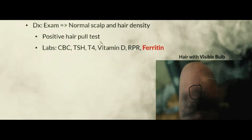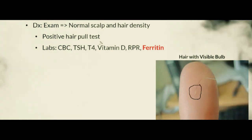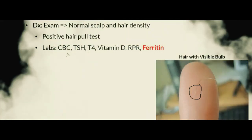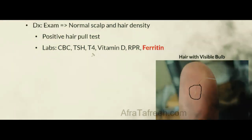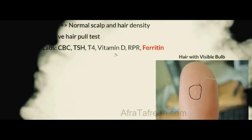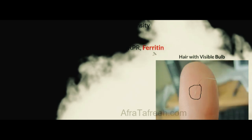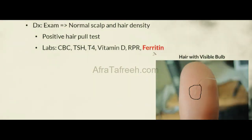There are several labs we may order in a patient with telogen effluvium when there is an unclear stressor or etiology. These include a CBC to evaluate for anemia, TSH and T4 for thyroid disease, vitamin D for deficiency, RPR as an initial test for syphilis, and ferritin to assess for iron deficiency. Menstrual bleeding can be an important cause of telogen effluvium, and simply restoring iron with supplementation can help resolve the alopecia.